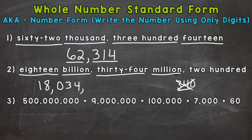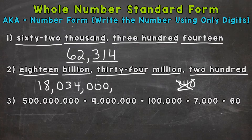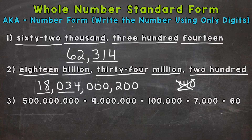After the millions, we have the thousands period. Looking at our word form — 18,034,200 — we don't have anything in the thousands period, so we need to fill that with zeros. Then we go to the ones period, where we have 200. We need a 2 in the hundreds place to represent that 200, a 0 in the tens, and a 0 in the ones. Double checking: 18 billion, 34 million, nothing in the thousands, and we wrap it up with 200. Our standard form matches our word form.